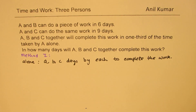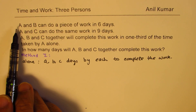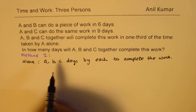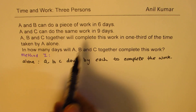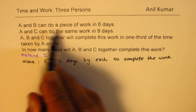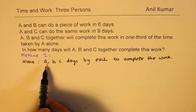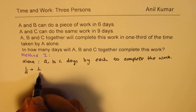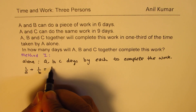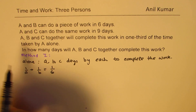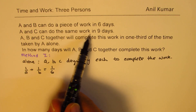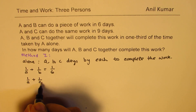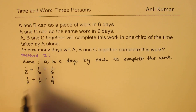Now we'll form equations. A and B can do a piece of work in six days. So A's contribution in one day is one over A. In six days it is completed. So we get one over A plus one over B equals one sixth. That's our first equation. Second equation: A and C can do the work in nine days, meaning one over A plus one over C equals one over nine.